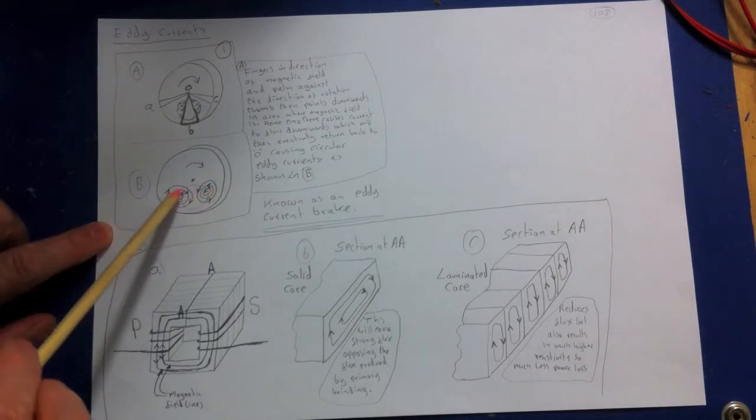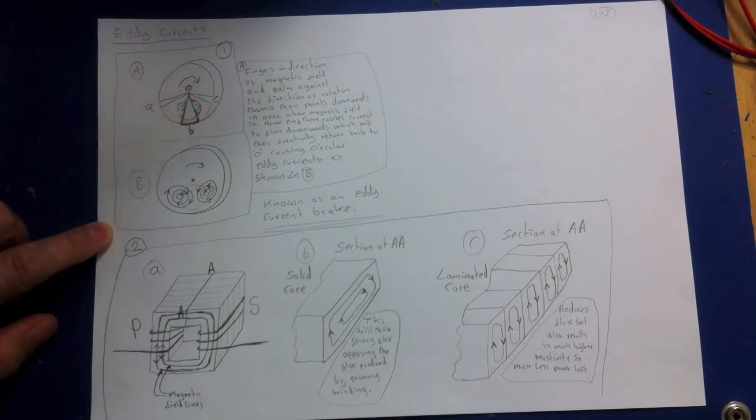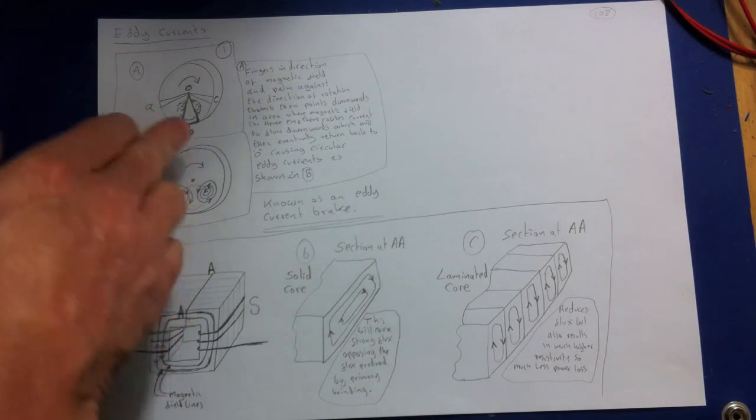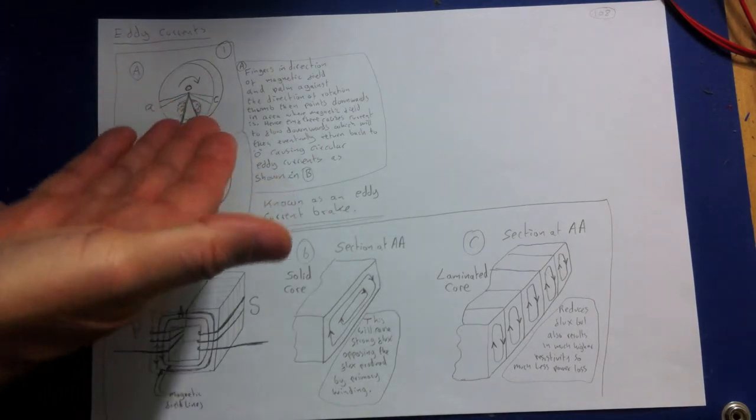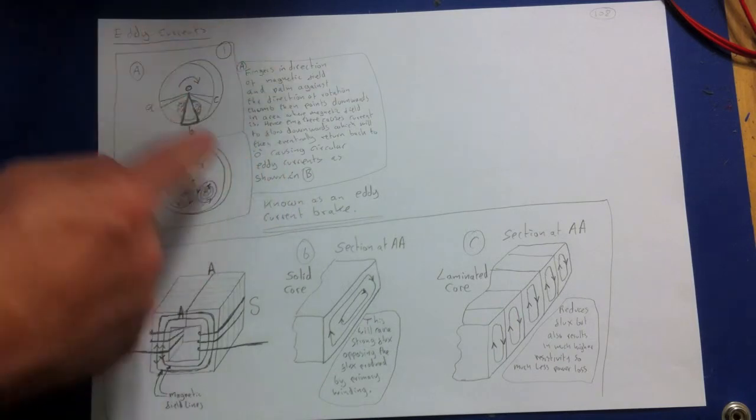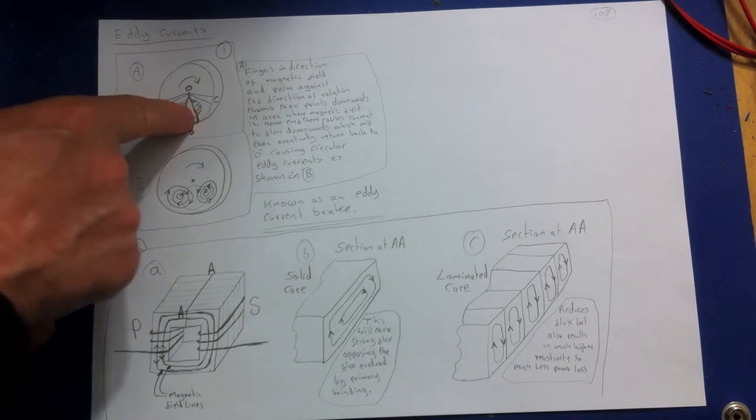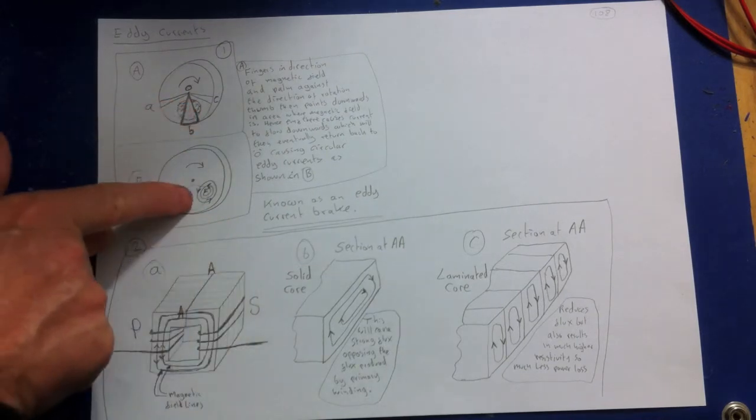So these eddy currents appear here. If you look at this side, for example, and it's moving round, we've got a magnetic field going in this direction. So if we point our fingers in the direction of the magnetic field and put our palms to oppose this motion, like that, then we can see that the thumb will be the direction on that particular part there. The thumb will be the direction of the induced current.